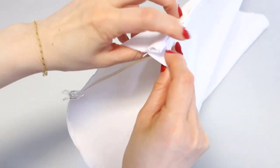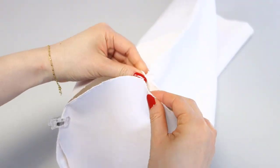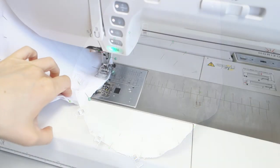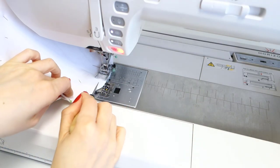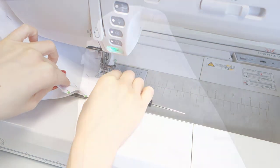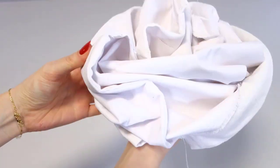The center of the seam allowance on the bag should align with one of the four marks. Use clips or pins to hold them in place. Sew with 1 cm or 1 3rd of an inch seam allowance. When it's done, turn the bag inside out and adjust the shape.